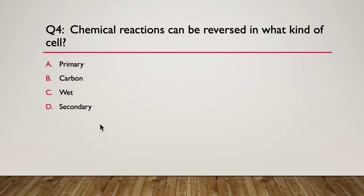Question four. Chemical reactions can be reversed in what kind of cell? A, primary. B, carbon. C, wet. D, secondary. Our hint. This type of cell is rechargeable. Our answer is a secondary cell.